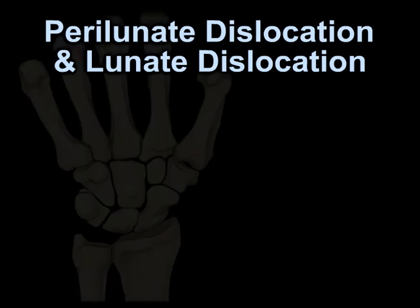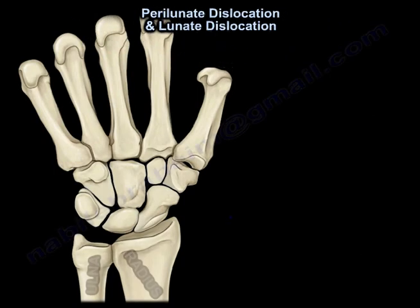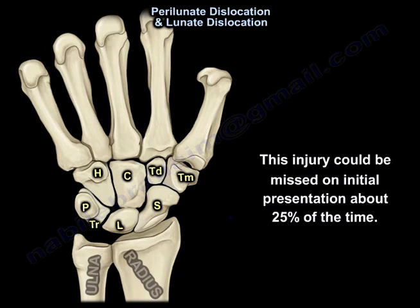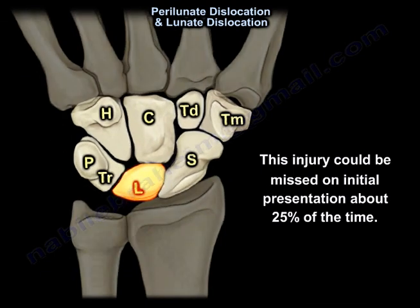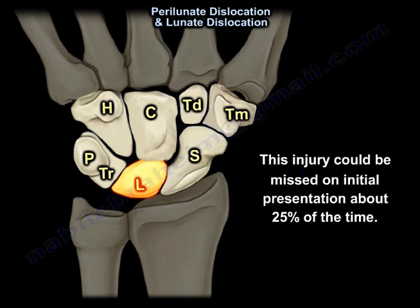Perilunate dislocation and lunate dislocation — this injury can be missed on initial presentation about 25% of the time.